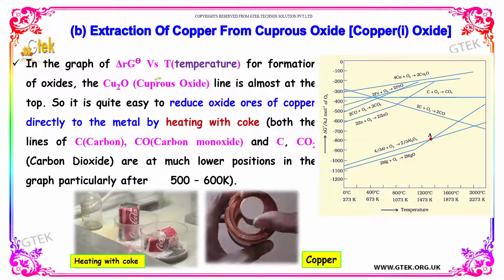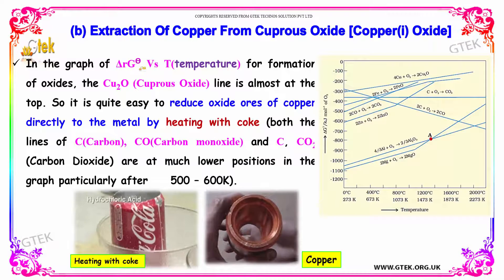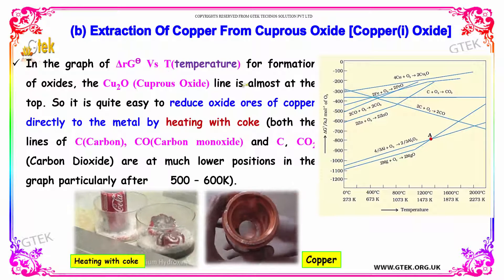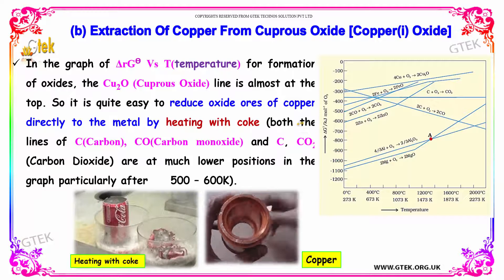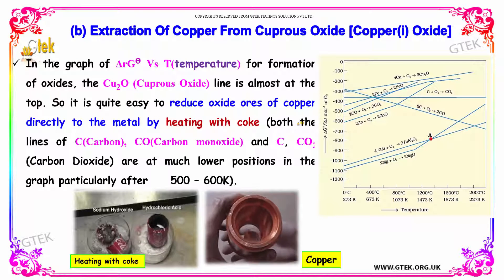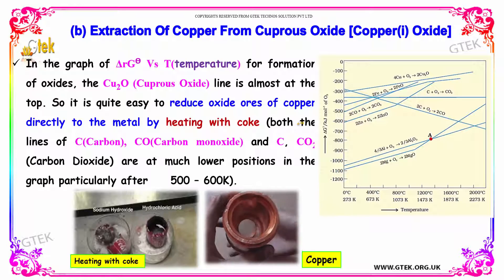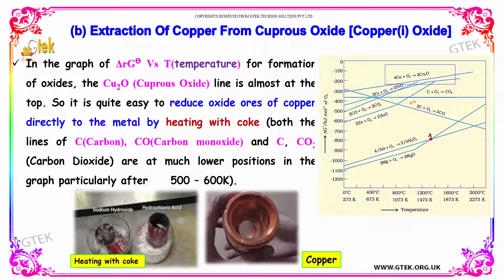In the graph of delta G theta versus temperature for the formation of oxides, the cuprous oxide line is almost at the top. So it is quite easy to reduce oxides of copper directly to the metal by heating with coke, as both the carbon and carbon monoxide lines are lower.